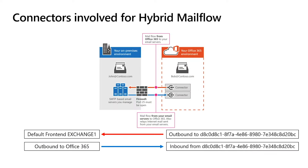Now that we understand various mail routing scenarios, let's understand the different connectors involved in the routing. There are two sets of connectors. For mail flow from Office 365 to Exchange on-premises, there is an outbound connector from Office 365, and on the on-premises side, the email is accepted by the default front-end receive connector. For routing email from on-premises to Office 365, a send connector called outbound to Office 365 is created on the on-premises side. Also, an inbound connector on the Exchange Online side will accept the email from on-premises servers. All these connectors are either created newly or existing connectors are modified when you run the Hybrid Configuration Wizard.